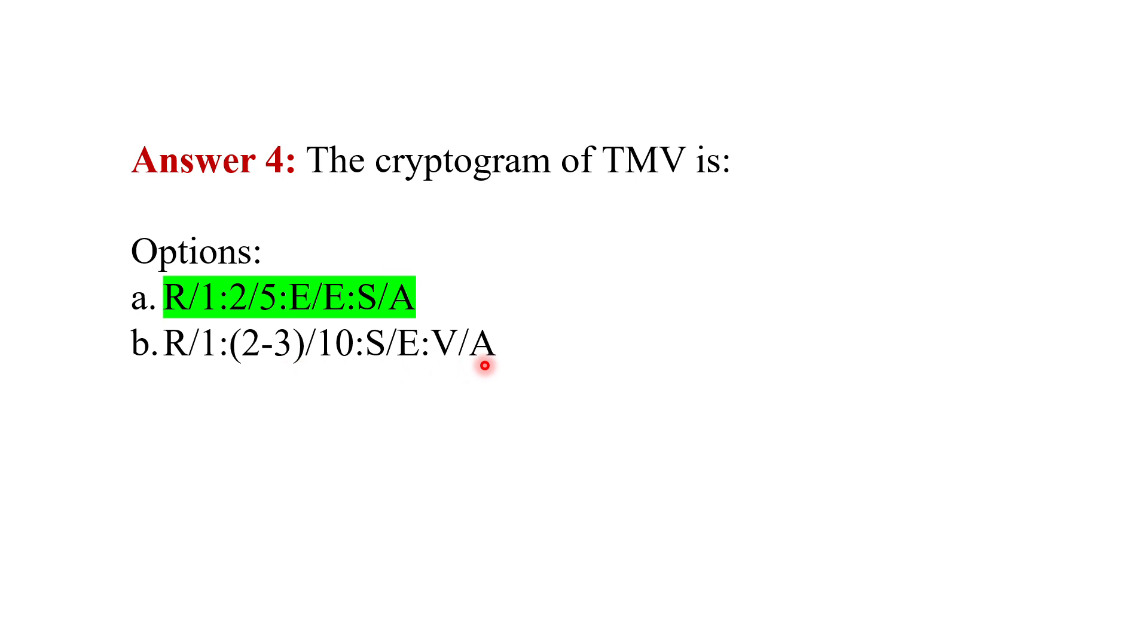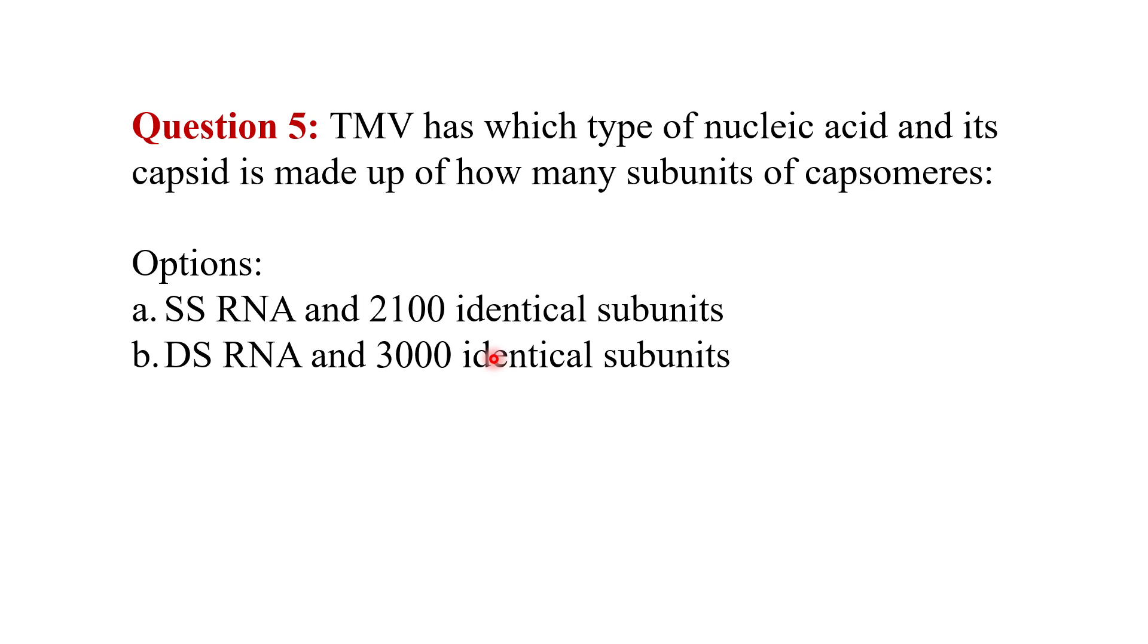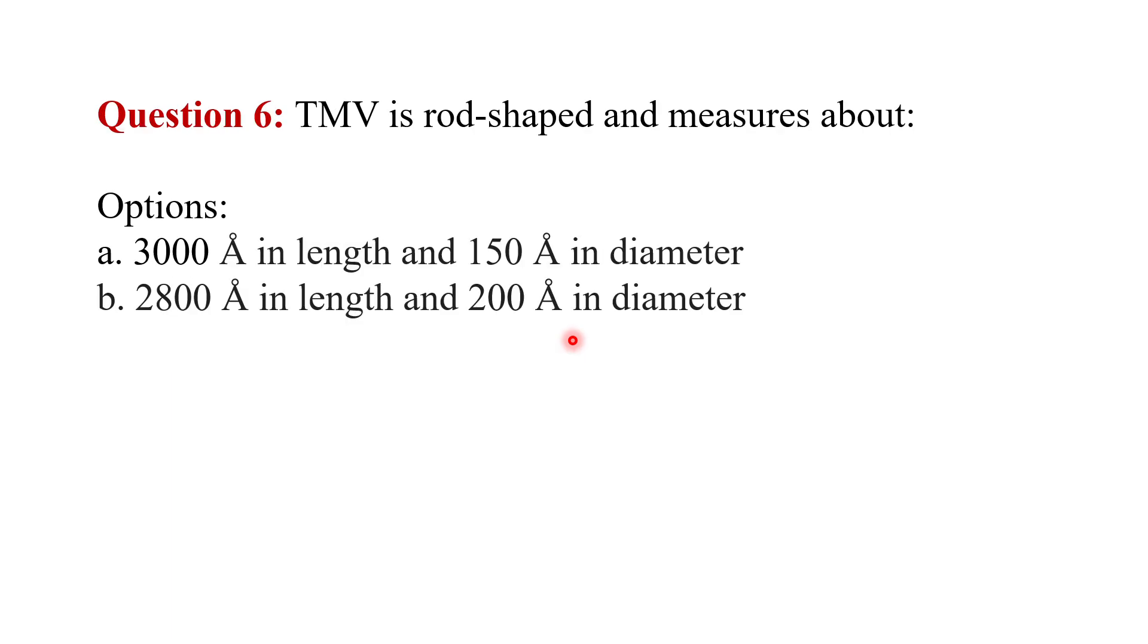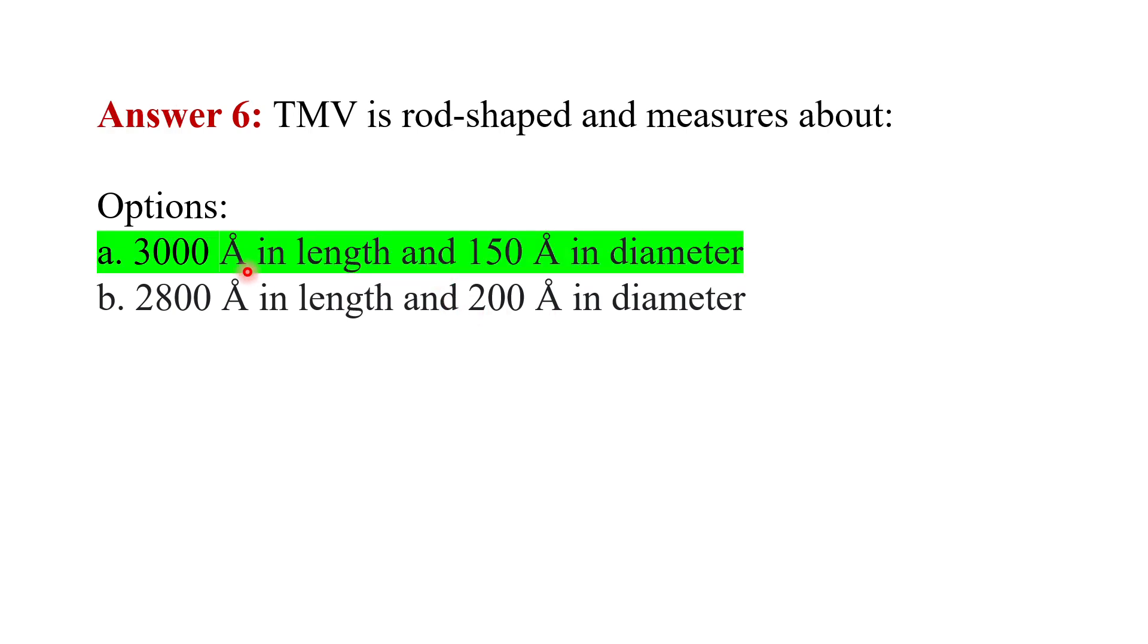The fifth question is: TMV or the tobacco mosaic virus has which type of nucleic acid and its capsid is made up of how many subunits of capsomeres? The answer is it is single-stranded RNA and the capsid is made up of 2130 identical subunits of capsomeres. TMV is rod-shaped and measures about 3000 angstroms in length and 150 angstroms in diameter.